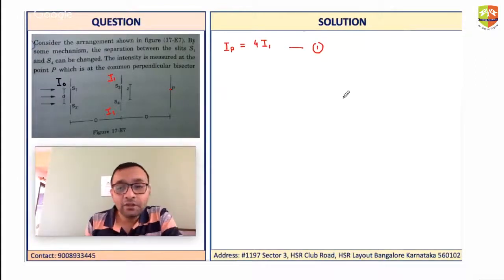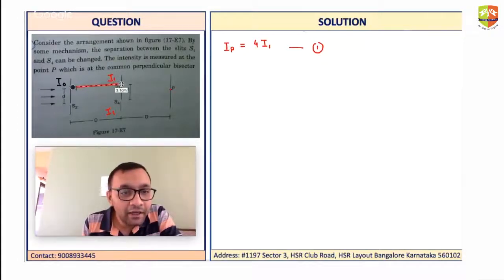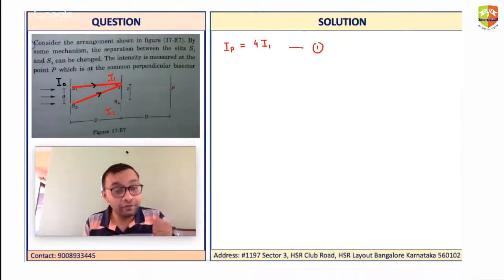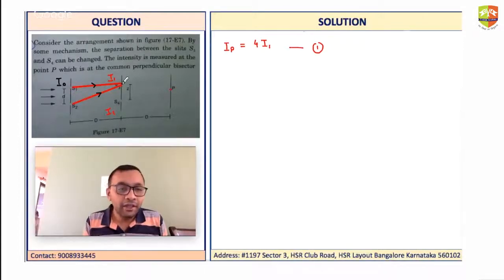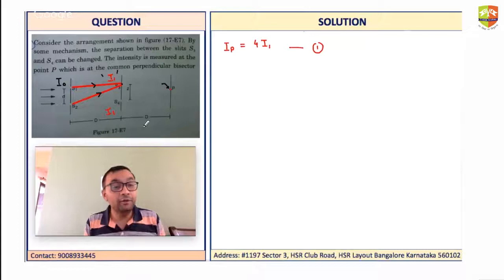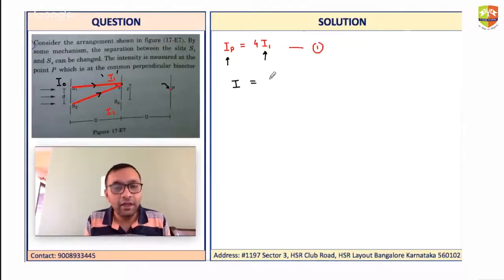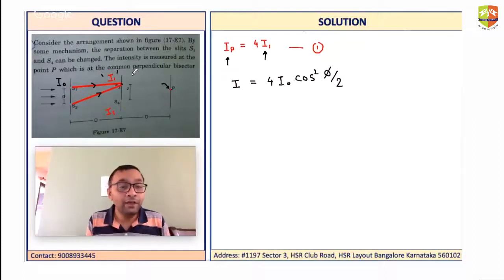At slit S3, both waves from S1 and S2 will arrive and interfere before coming out from S3. Depending on whether the interference is constructive, destructive, or partial, the intensity I1 will vary. To get maximum possible intensity at point P, I need maximum possible intensity at S3. The intensity at any location is given as 4I₀ cos²(φ/2), where φ is the phase difference — here evaluated in the plane of S3 and S4.